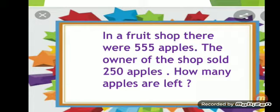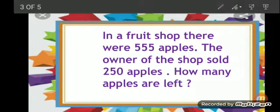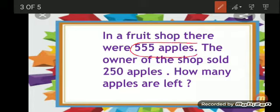Read the first line: In a fruit shop, there were 555 apples. First, you see what has been given and how many. Here, the number of apples has been given — 555 apples. In subtraction, we always make the first statement by taking the total number of things. The total number of apples is 555. So the first statement will be: number of apples is equal to 555.